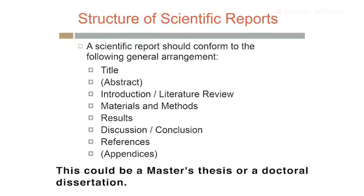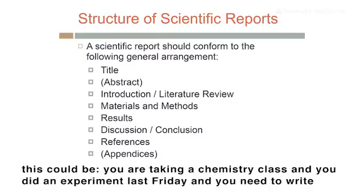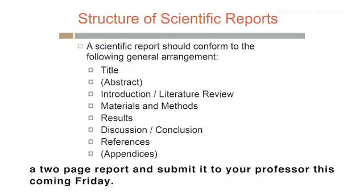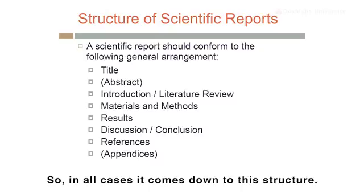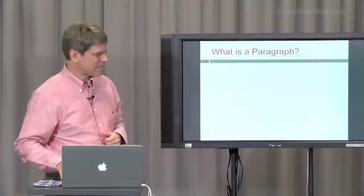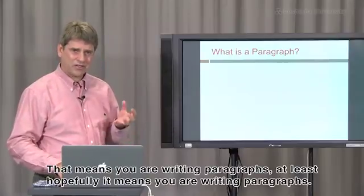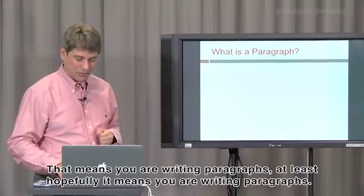So this is the basic structure of a scientific report. This could be a master's thesis or a doctoral dissertation, an article a scientist is trying to publish in a peer-reviewed international journal, or it could be that you're taking a chemistry class, you did an experiment last Friday, and you need to write a two-page report to submit to your professor this coming Friday. In all cases, it comes down to this structure.